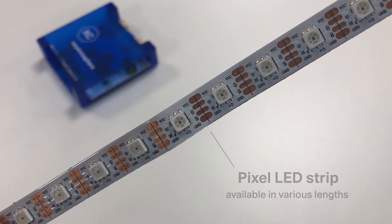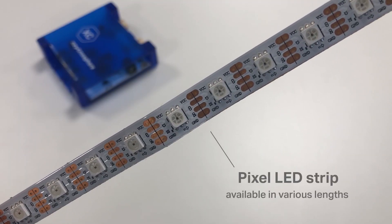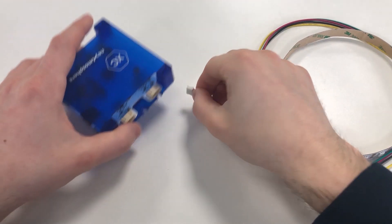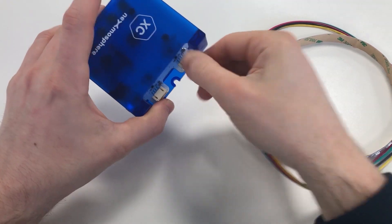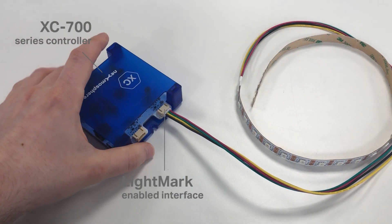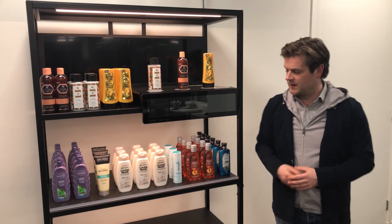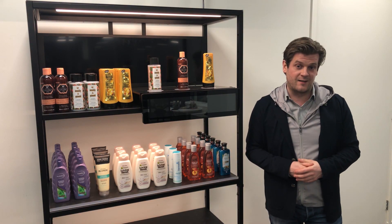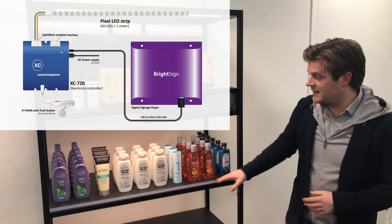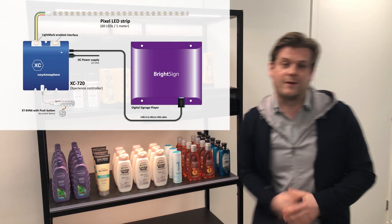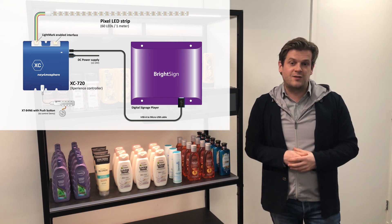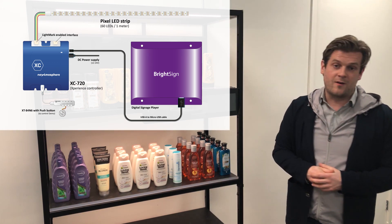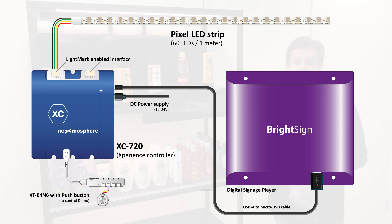Lightmark is able to control a pixel LED strip which is connected to a Lightmark enabled interface. This will become available first on our XC700 series controllers. Over here we have a demo setup on which I will show the functionalities. We have a pixel LED strip of 1 meter covering the entire edge of the shelf. This LED strip is connected to a Lightmark enabled interface on the XC720 controller which is controlled by a digital signage player.